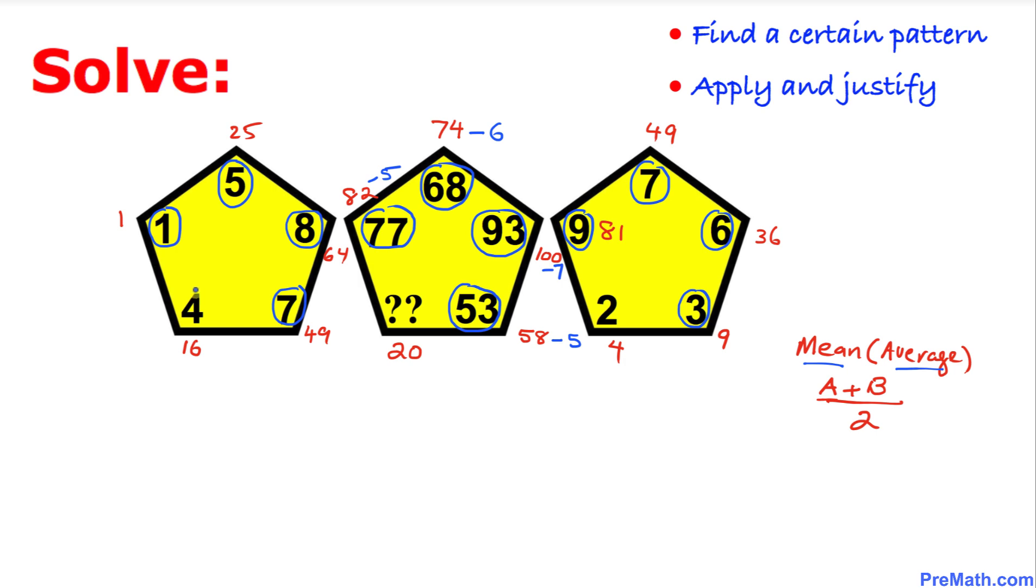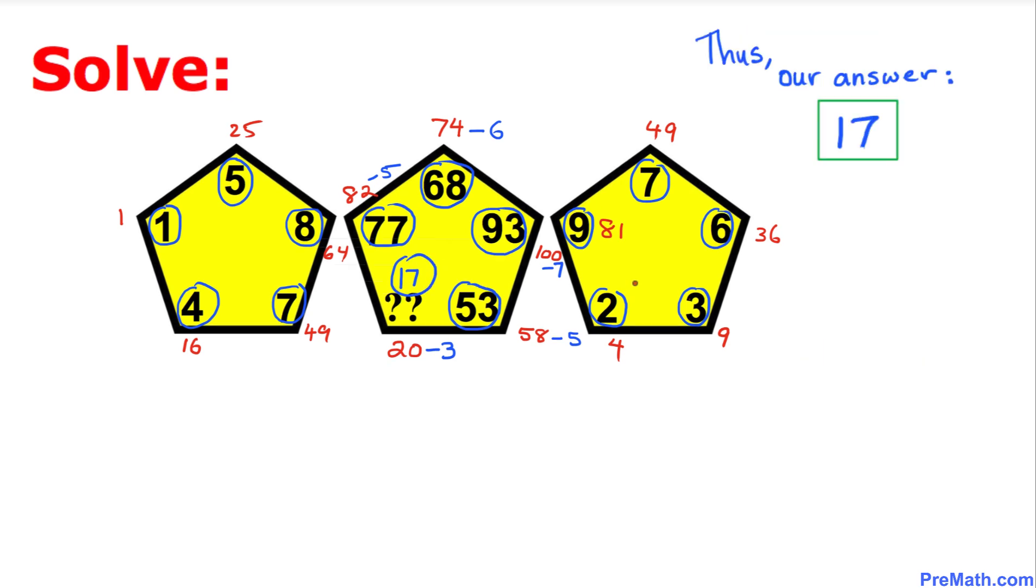Once again let's find the mean of 4 and 2, that is going to give us 3. So we are going to subtract 3 from 20. That means our desired number is going to be 17. Thus our answer turns out to be 17.